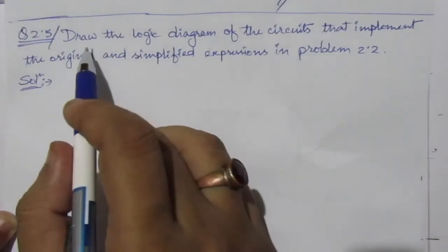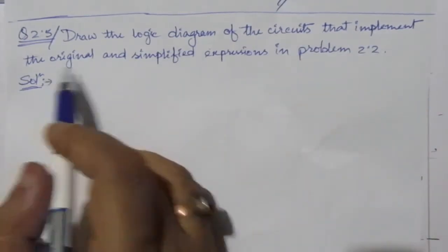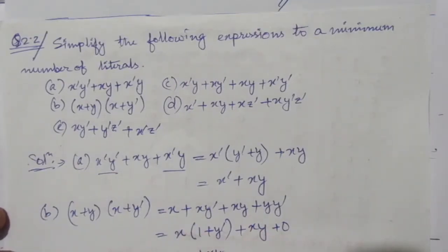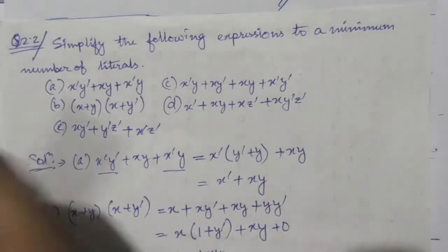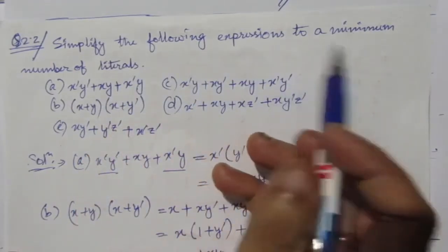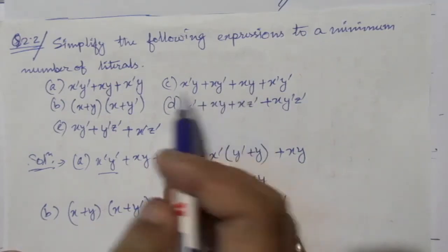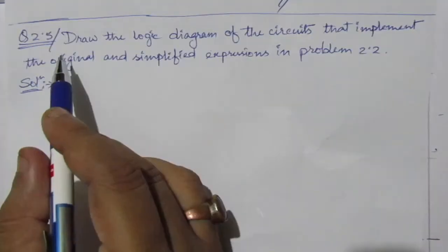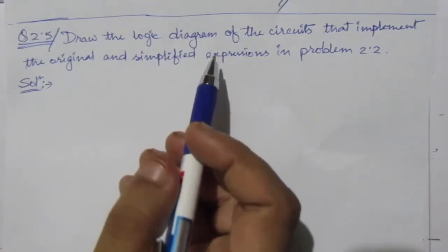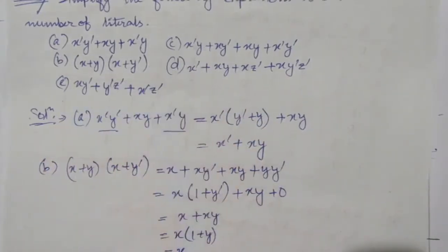The problem is: draw the logic diagram of the circuits that implement the original and simplified expressions in problem number 2.2. Problem 2.2 has 5 sections, and the problem was to simplify the expressions to a minimal number — that means we have to minimize the number of literals in each expression. Here we have to draw the logic diagrams of these original expressions; these 5 are the original expressions.